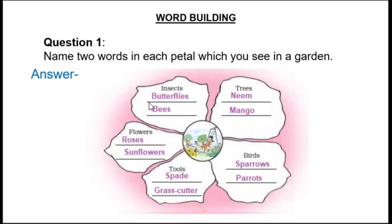Now let's write the answers. Insects: butterflies, bees. Trees: neem, mango. Flowers: roses, sunflowers. Tools: spade, grass cutter. Birds: sparrows, parrots.